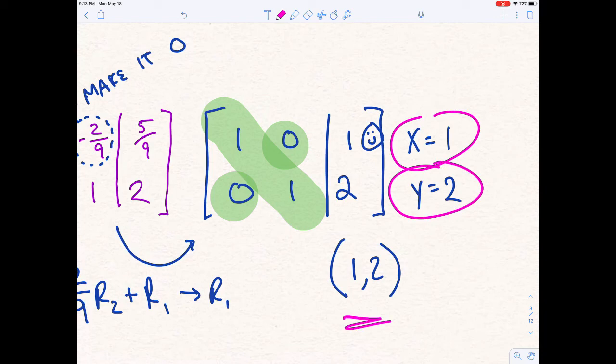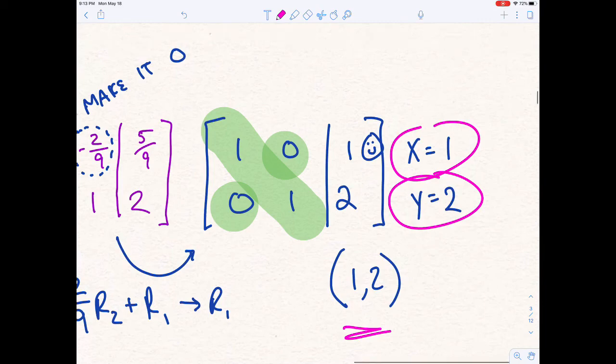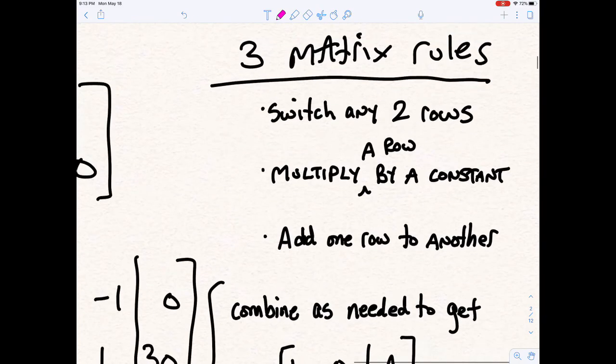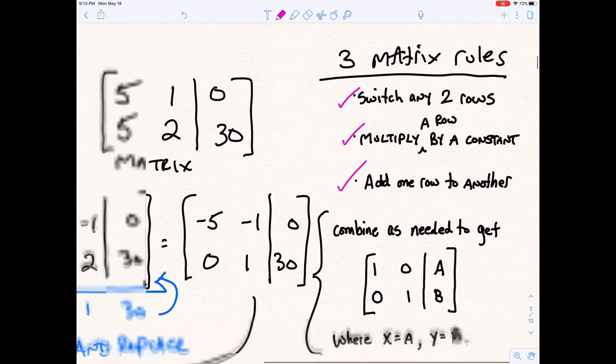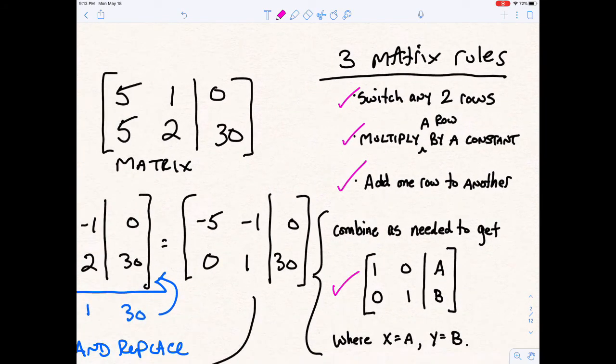So that is a brief reminder of how to solve with matrices. The key takeaway here is that there are three matrix rules. You can switch any two rows, you can multiply any row by a constant, and you can add one row to another. Your goal is to get a diagonal of 1s with 0s in the opposite spaces. And we did learn that if you can do a 2x3 matrix, then you could do a 3x4 matrix and bigger. Next time we talk, we're going to talk about 3x4 matrices. So good luck solving 2x3 matrices.